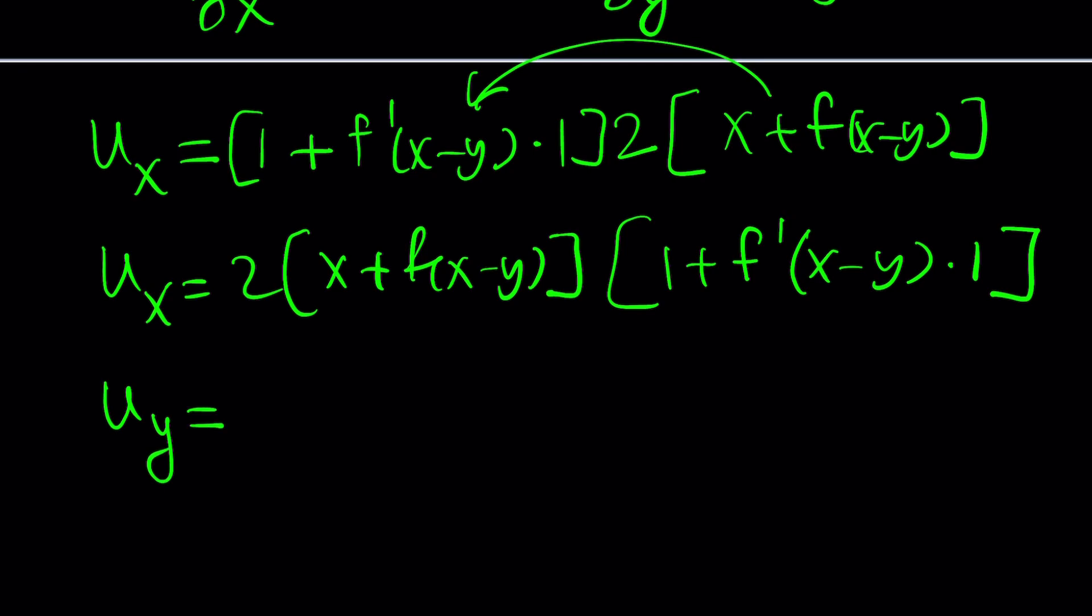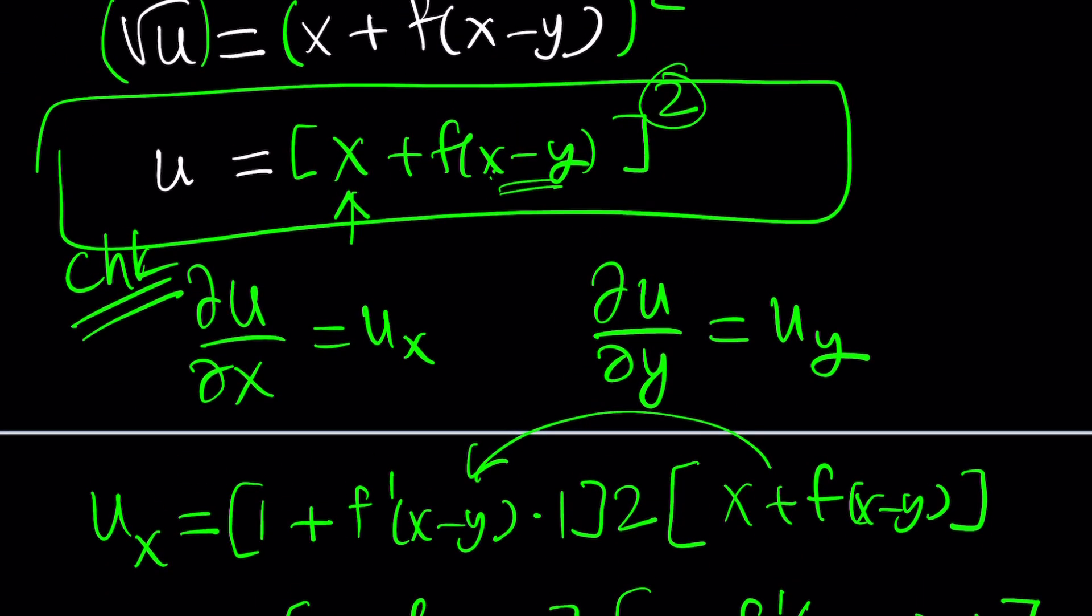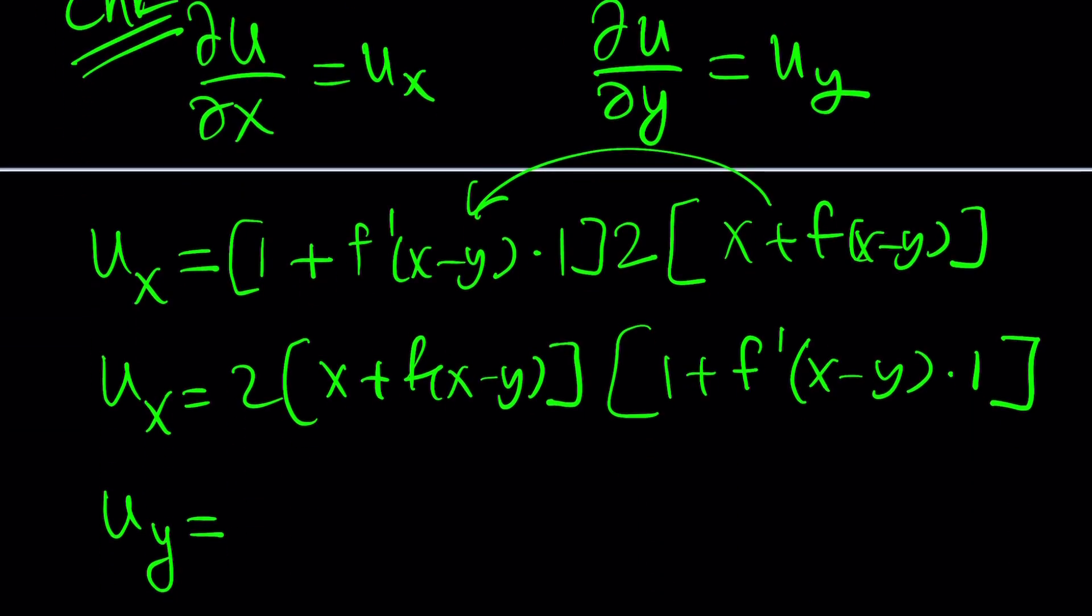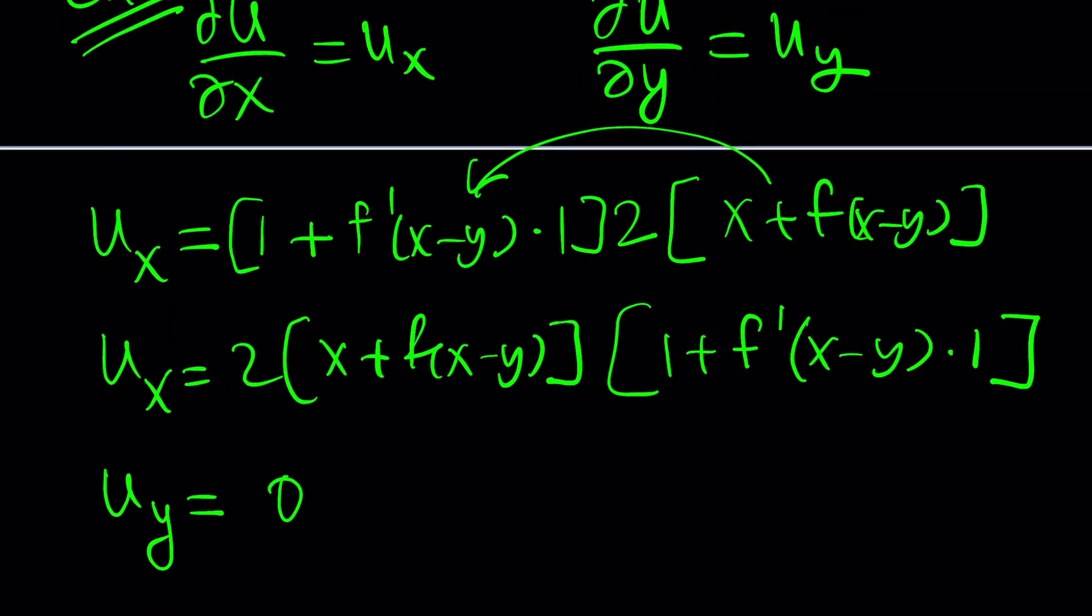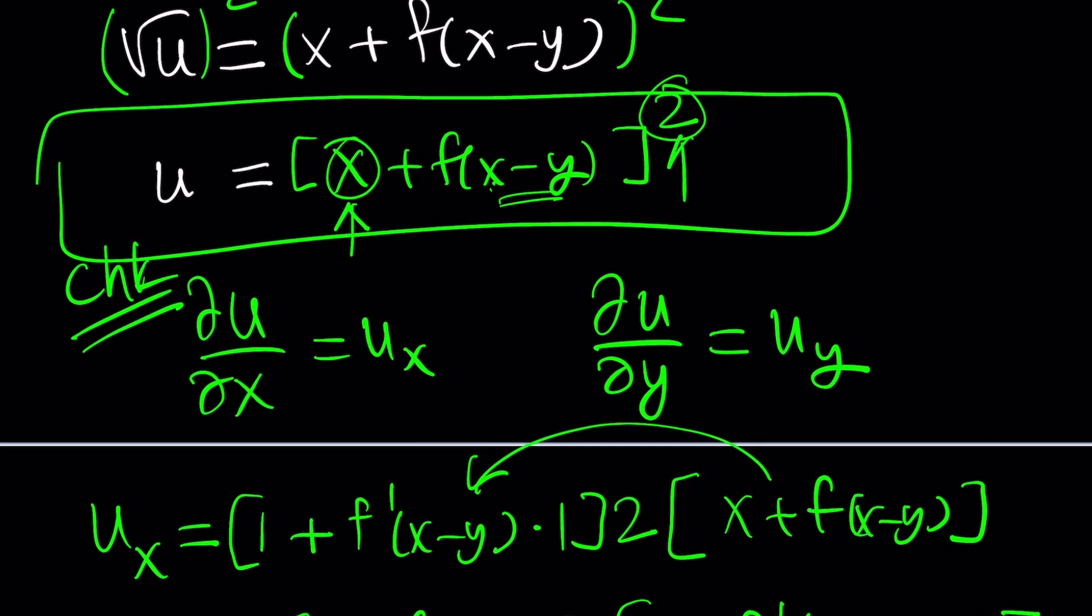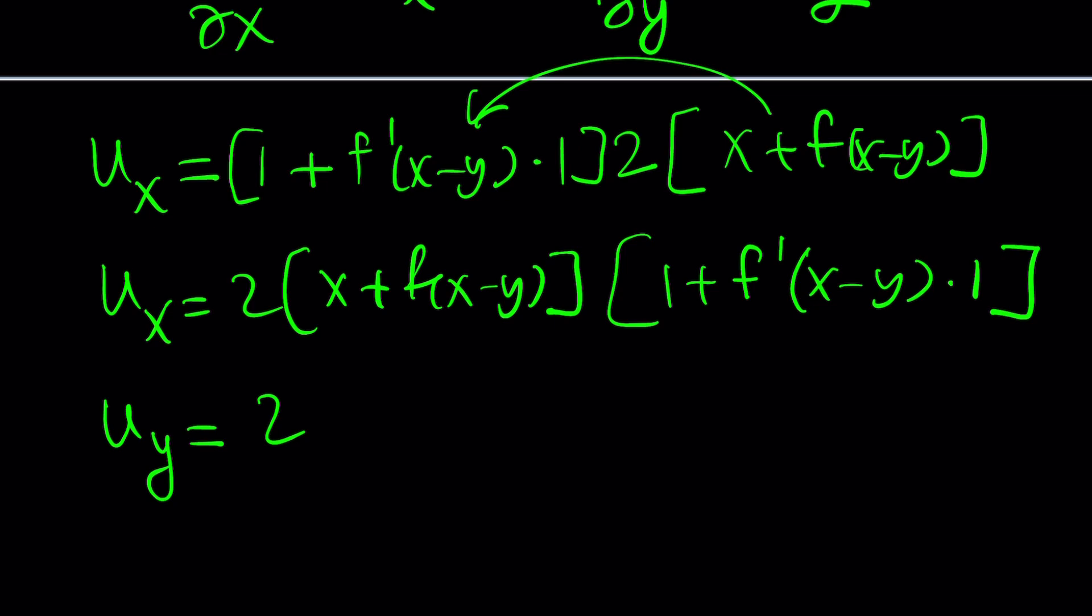Let's do the same thing for u sub y, which is the partial derivative. The only thing that's going to change, let me tell you, when you differentiate x with respect to y, it's going to be 0 because x is going to be the constant, remember? So, it's just going to be 0. And of course, you know what? Why am I differentiating the inside again? Sorry. That's just a habit. So, I have to do the power first. So, bring down the power, lower the power by 1, and then do the inside.